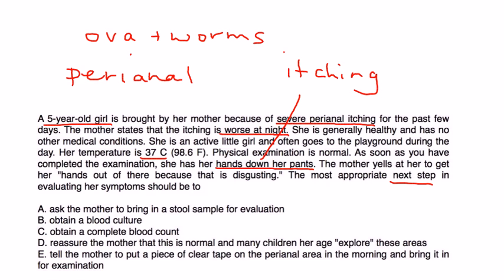That would essentially be choice E, which is you tell the mother to put a piece of tape on the anal region and bring it back so they can put it under the microscope to detect it.